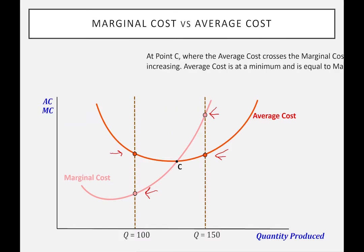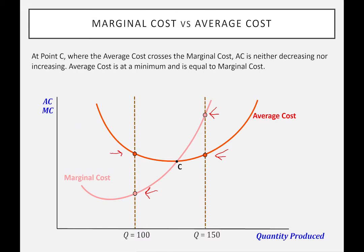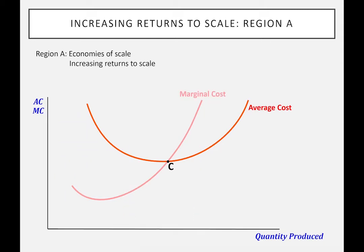You'll notice that there's a point C where the two lines cross, and at that point the marginal cost must equal the average cost, which also means that the average cost is not changing. So the slope at this point is going to be zero. And with that distinction made, we can now look at the idea of economies of scale.